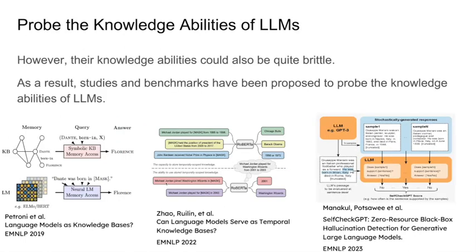However, their knowledge abilities could also be quite brittle, with large language models generating hallucinated information, struggling to encode long-tail facts, and falling short of abstaining when relevant information is not present in model parameters.